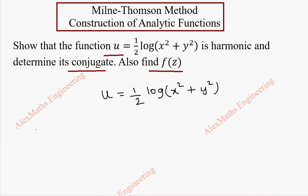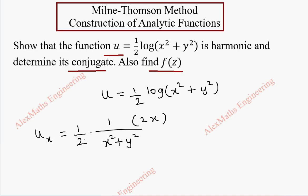Now we are going to find ux, the partial derivative of u with respect to x. Half is a constant kept as is. This gives 1 by x square plus y square, then by chain rule the derivative is 2x, and y square is constant so only 2x comes. After cancelling, we have x by x square plus y square.